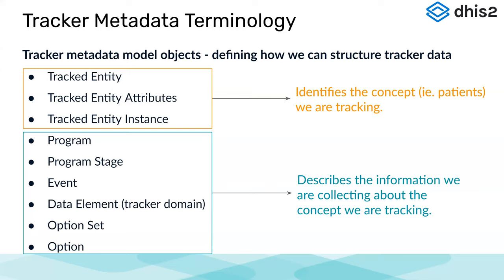Looking at the metadata objects in the tracker model, we have three top-level terms: tracked entity, tracked entity attributes, and tracked entity instance. These identify the concept we are tracking. In our examples we'll use patients — people who come back to receive clinical care — but you can track anything: a lab sample, a fridge, a stock item, or some other component. Patients is a common example to get you thinking about how to track an object through DHIS2.